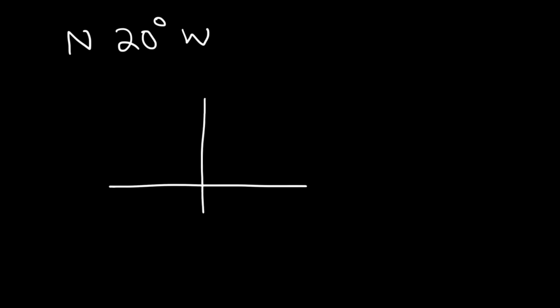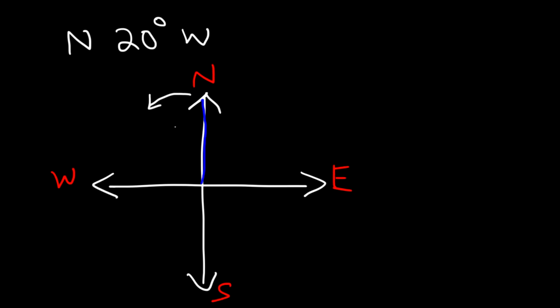Let's try another example. If we have the bearing north 20 degrees west, how would you draw it? So: north, east, south, west. Starting with the north-south line, we need to travel 20 degrees towards the west. The bearing is represented by the green line — the object is moving in that direction.